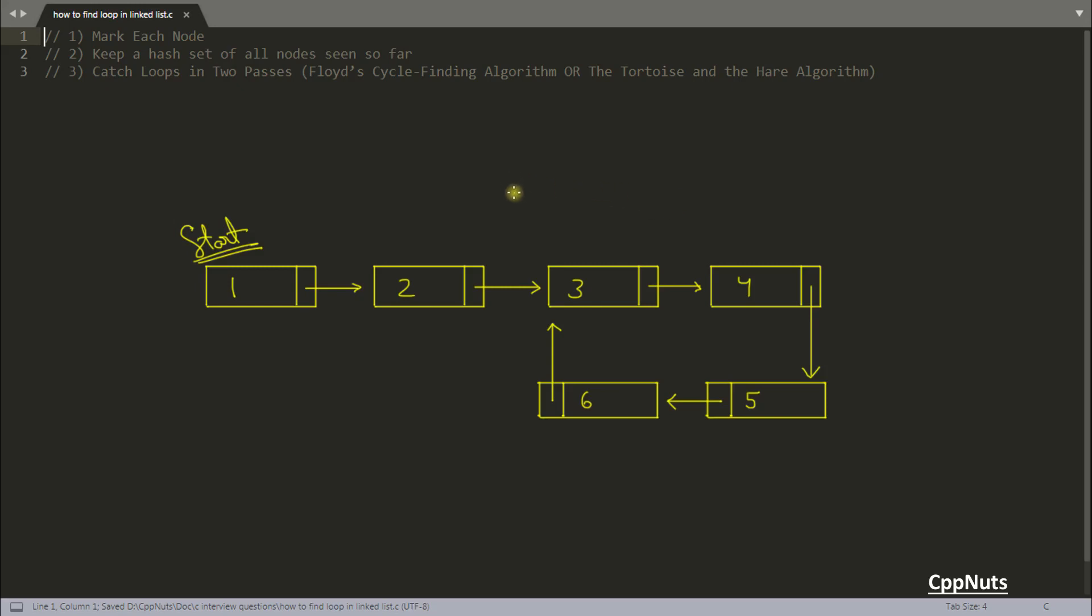Hello friends this is Rupesh and I am watching CpNuts video series on C interview questions. In this question we will be learning about how to find the loop inside the single linked list. So how to find the loop in the linked list - there are basically three ways of doing this. There are other ways too but I find these three more interesting.